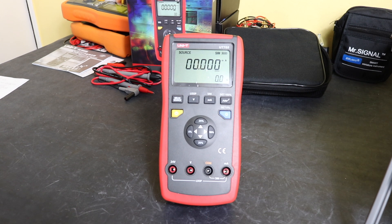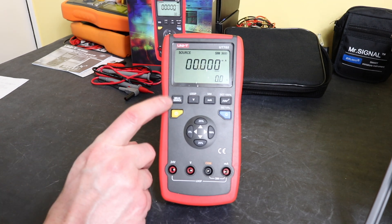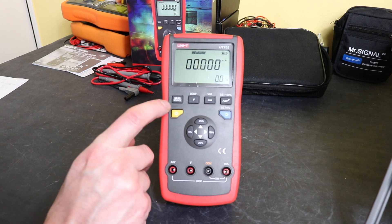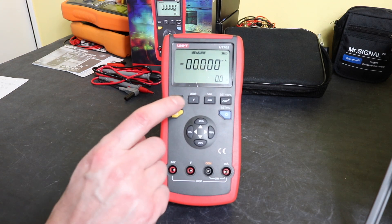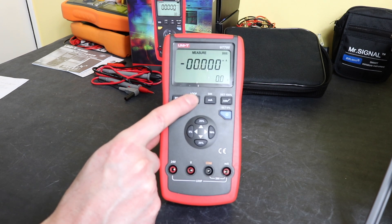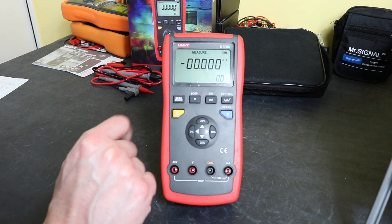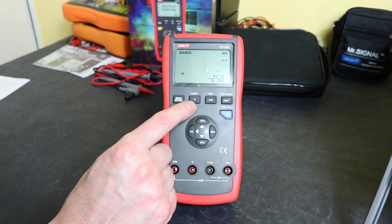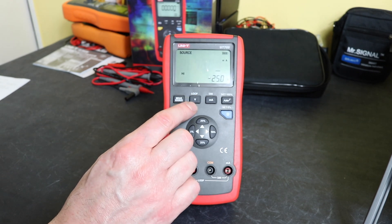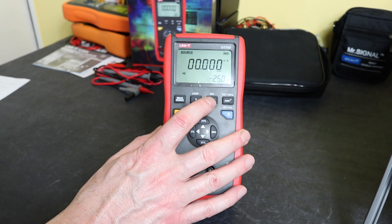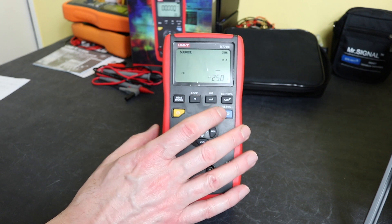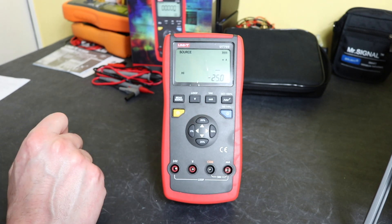In terms of the operation of the unit, you can swap between measurement and source mode on the button here at the top. You can change between voltage using the second button and then current using the third button along there. Change it back to source and then you can only source current on this. So the voltage button just changes that to the loop function, and the simulation button changes it to the simulation mode which will supply 24 volts for a loop powered transmitter.